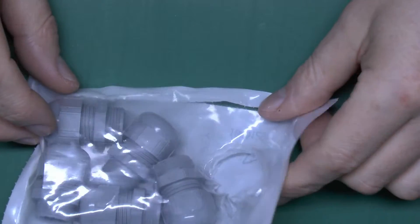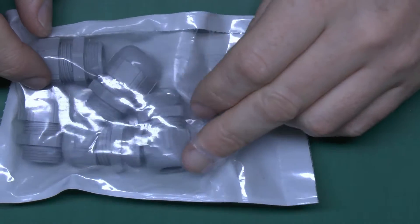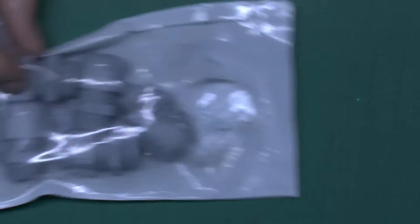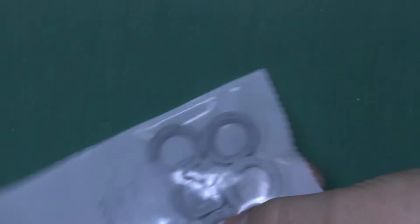Now there's two holes in the front which these glands will fit into. These are actually PG-11s which happily fit into the holes which are three quarters of an inch in size. And of course to go with those there's the lock nuts to go on the back.